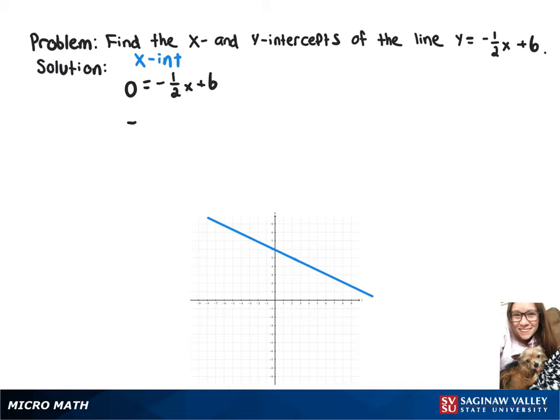Subtracting 6 from both sides gives negative 6 equals negative one-half x. Then we'll multiply both sides by negative 2 and get 12 equals x. So our x-intercept is (12, 0).